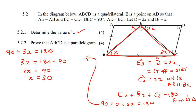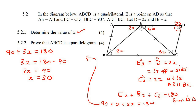So X would be equal to 30. We know X is now 30, so we can substitute: this would be 60, this would be 60, this would be 30, this would be 60, and this would be 30.